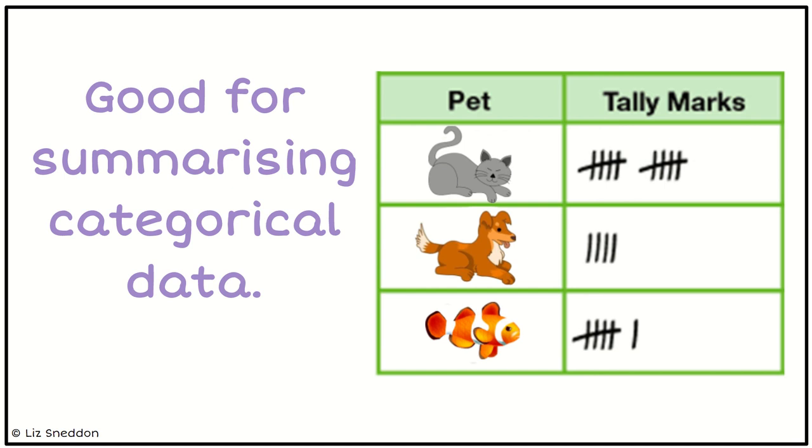If I just have one tally mark, it means the number one, two tally marks—two, three—three, four—four. And if I put a line through it, that means a block of five.